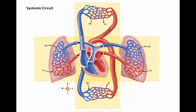The systemic circulatory route begins at the left ventricle, where oxygenated blood is pumped into the aorta. The aorta branches into smaller arteries, through which some oxygenated blood is transported to areas above the heart — into the arms and the head — while other branches transport blood to areas below the heart — into the trunk and the legs.